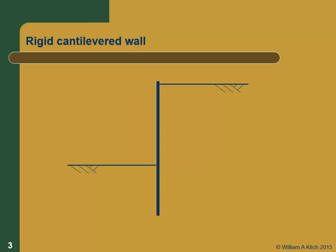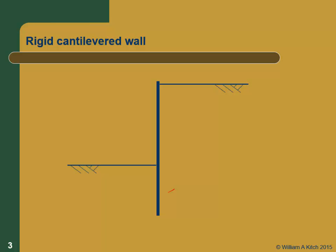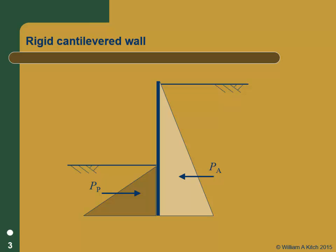If we have a rigid cantilevered retaining wall with no supports, we assume the whole piece acts rigidly — part embedded in the ground and part above. This is a classic cantilevered retaining wall. If the wall translates as a rigid body, we're going to develop active pressures on the back side assuming it moves far enough. On the front side, assuming enough displacement to mobilize all the passive pressures, we'll have a full passive triangular envelope on the front and a full active envelope on the back. From yesterday's lab data, if we get enough displacement, we get pretty close to these conditions.